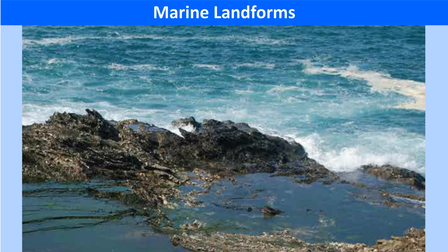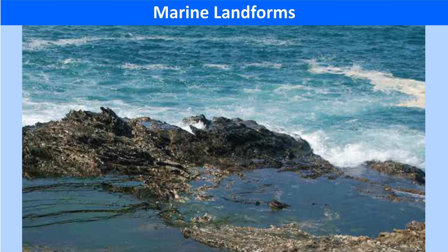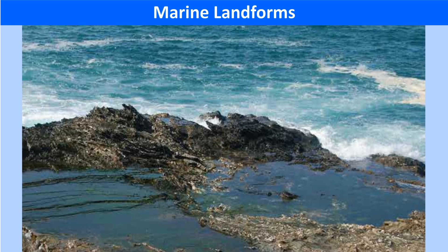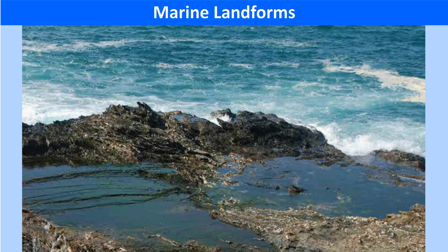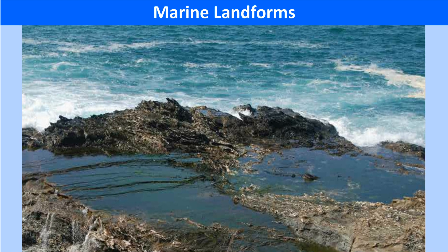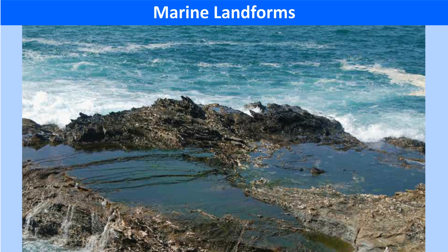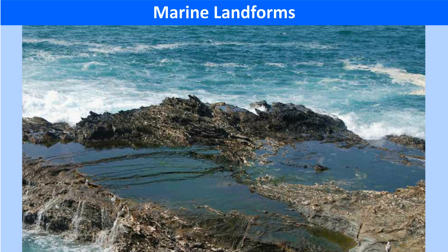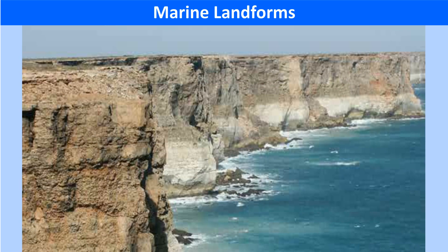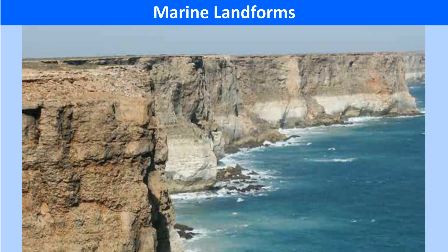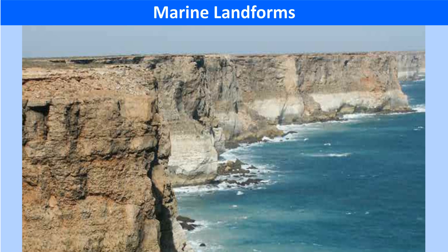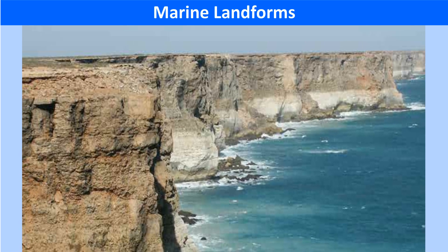As the waves come in and break on the shore, they erode the land and carry the material away. Where the rocks on the coast are soft, marine erosion pushes back the shoreline and carves out sea cliffs and wave-cut terraces or platforms. A cliff is defined as a steep vertical rock facing the sea — for instance, the White Cliffs of Dover, England.